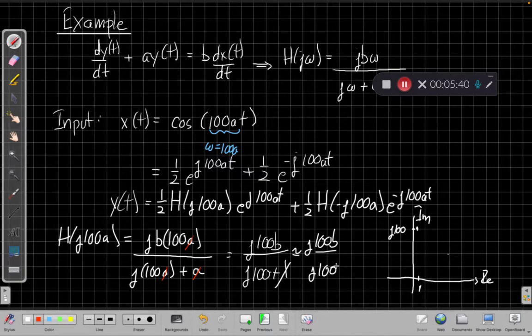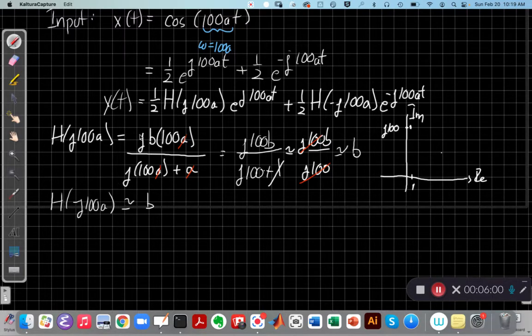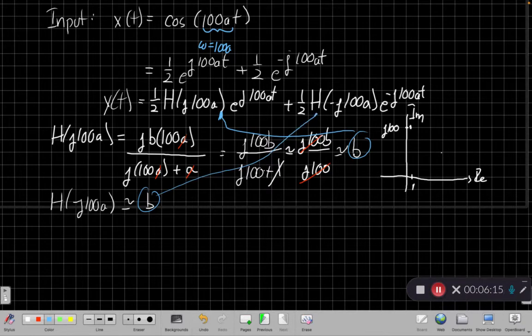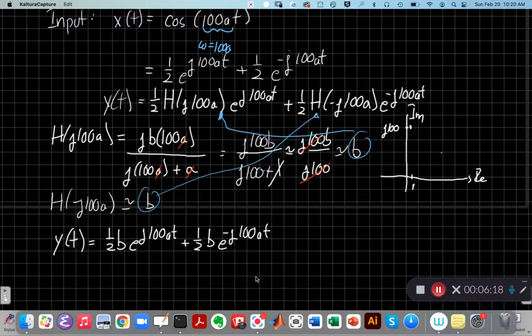And so this is approximately j times 100b over j times 100. And so I can cancel the j100s out. And then I'll say in an engineering sense, this filter is very close to a gain of b. And the same thing would happen at minus 100a. So these would both be negatives, and they would cancel out. So I'll get the same thing for the minus 100. So if both plus minus 100 are approximately b, I can plug those back into my equation for y(t) here.